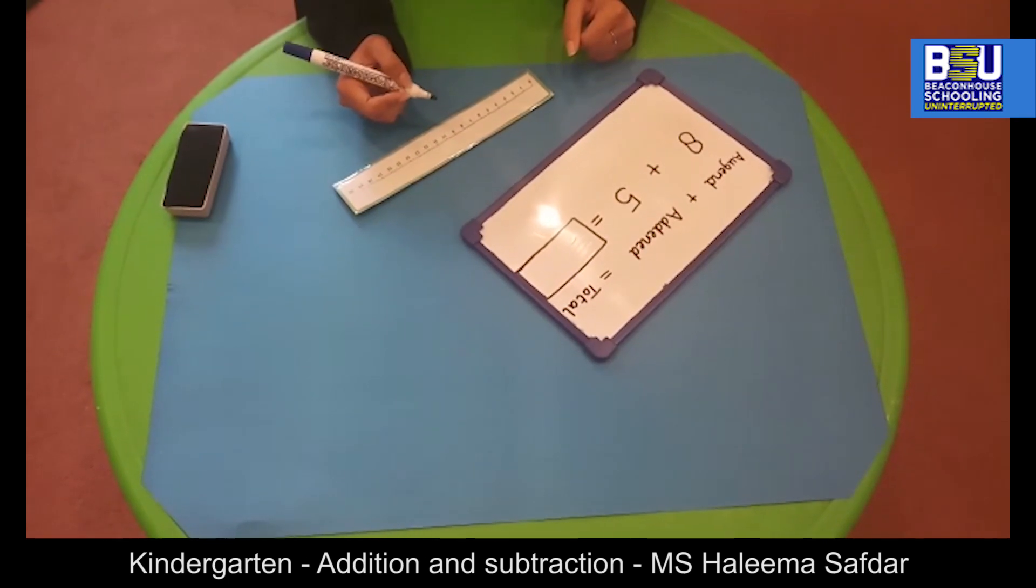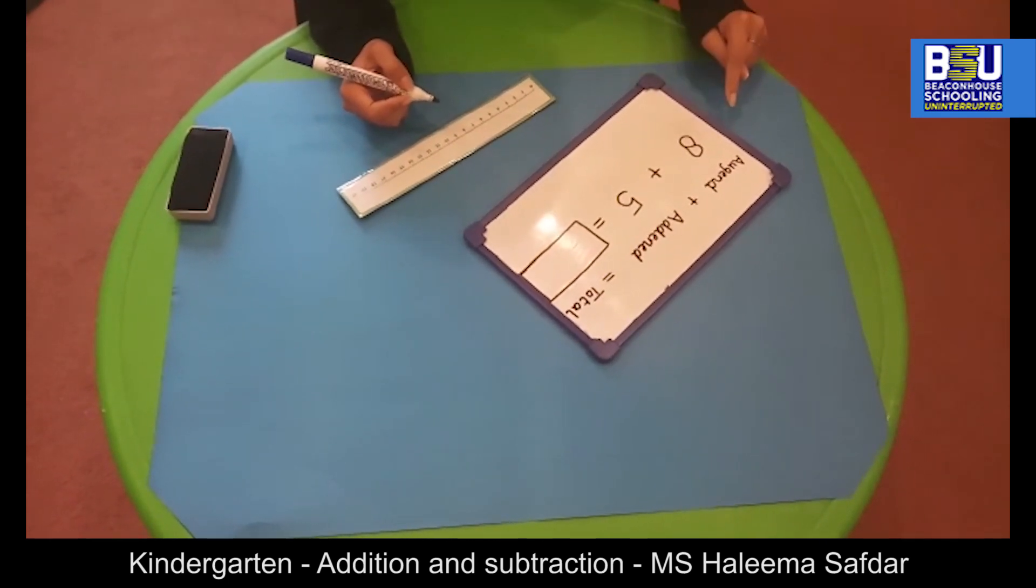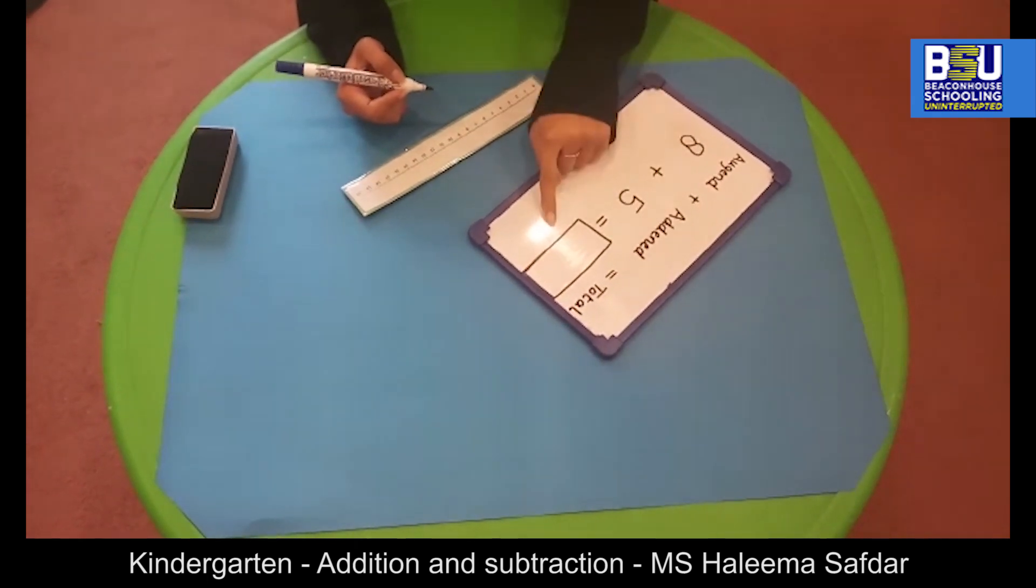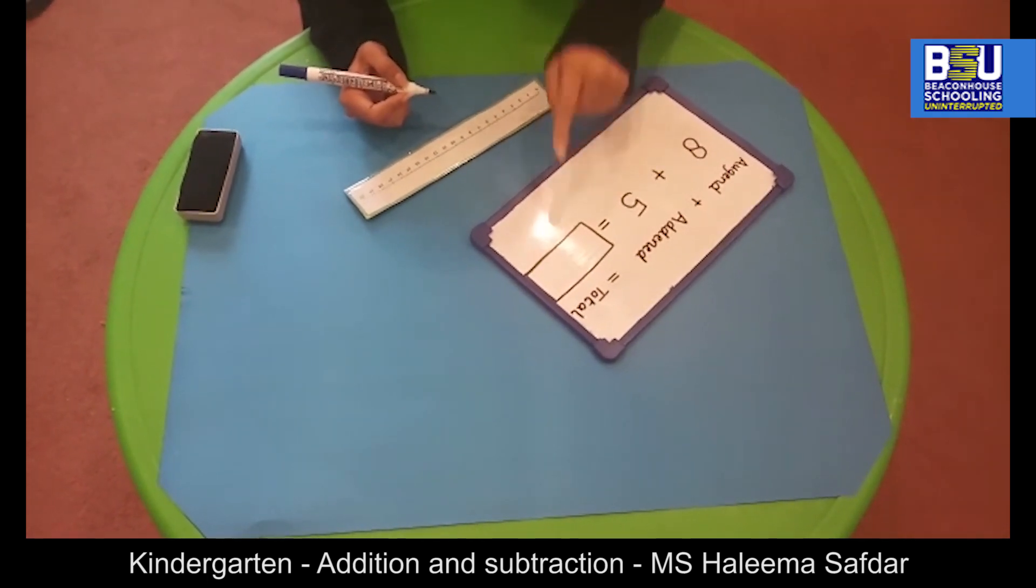We will begin with this addition statement in which 8 is the augend, 5 is the addend, and we are going to find out the total of both numbers.